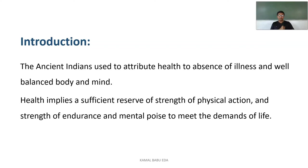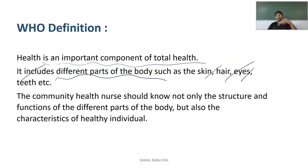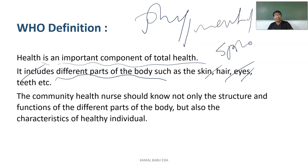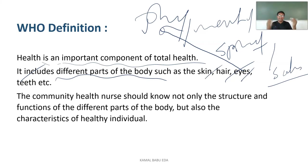Coming to the WHO definition, health is an important component of total health and includes different parts of the body such as skin, hair, eyes, and teeth. According to WHO, when we say a person is healthy, it means he is physically, mentally, spiritually, and socially healthy. If a person is physically unhealthy, he is considered unhealthy in the total aspect of health.